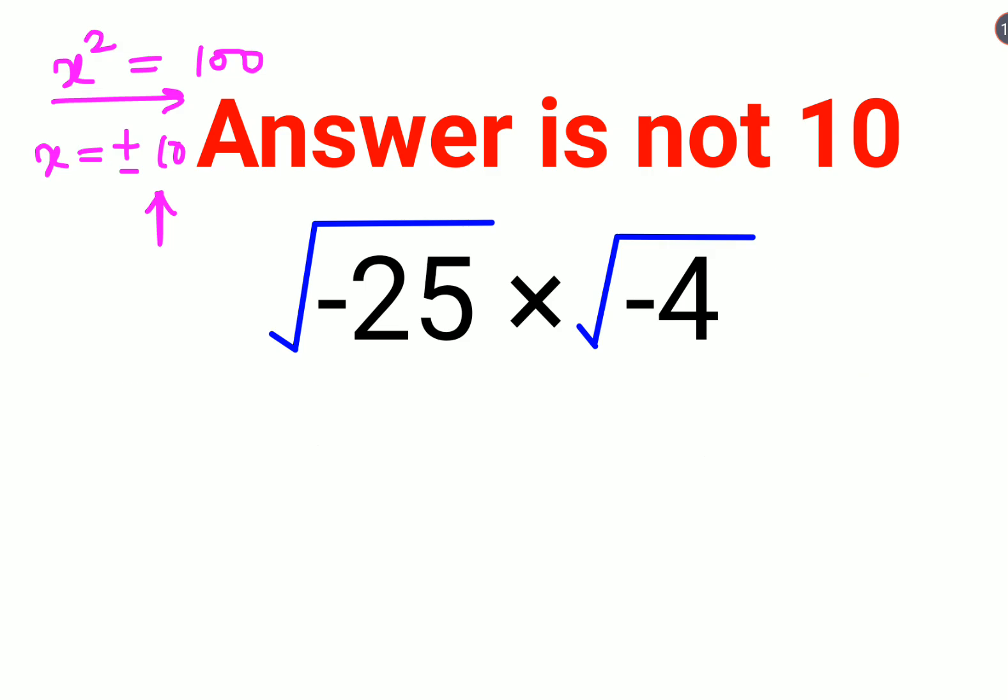Please understand whenever you have a root situation with a negative number, you can separate the 25 as it is and multiply it with a negative 1. Similarly, it will be for 4 as well. So it will be 4 into root of negative 1.